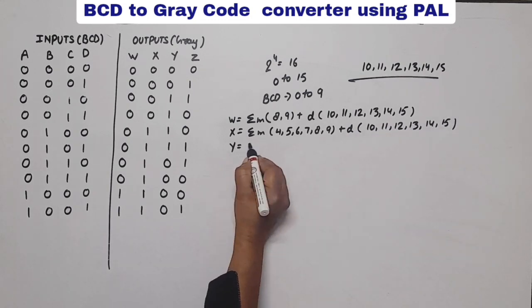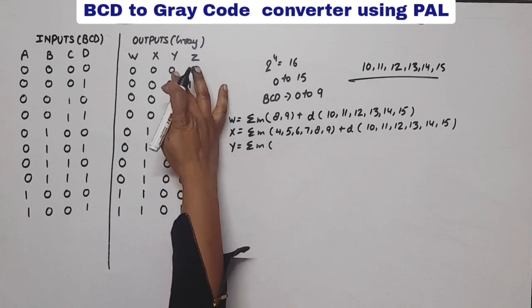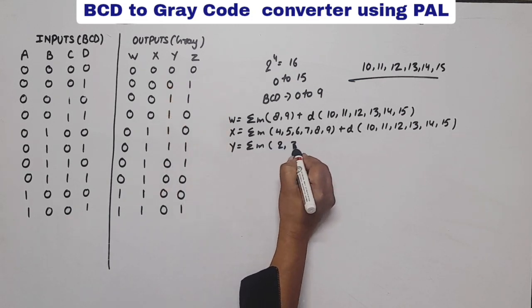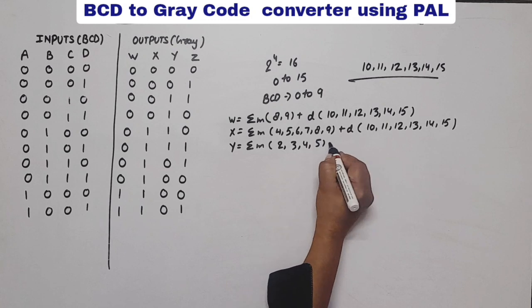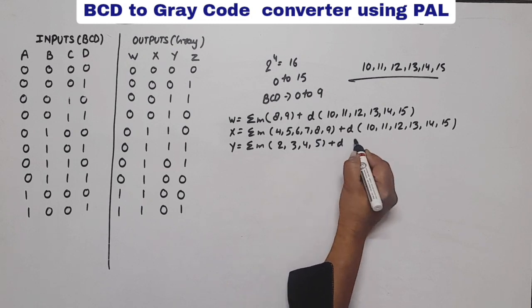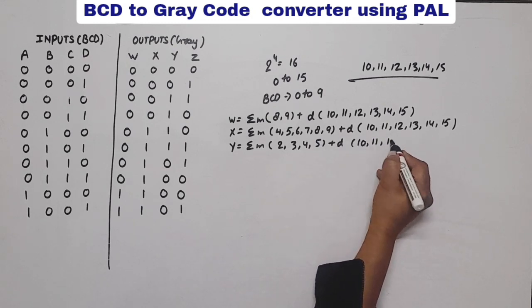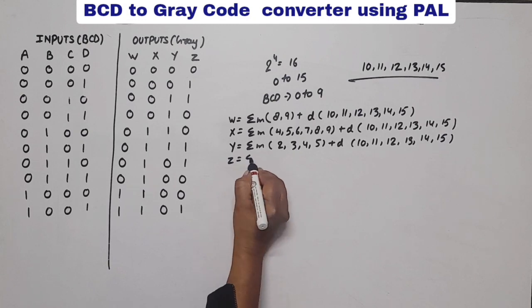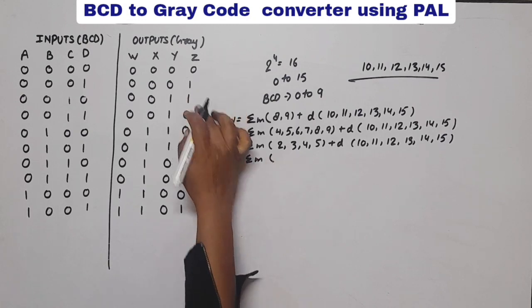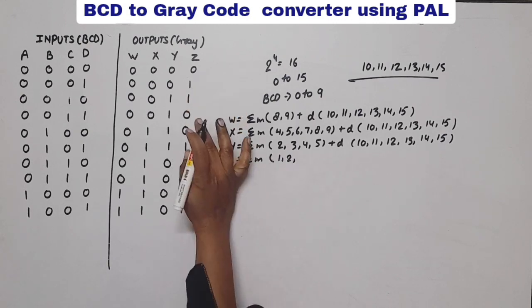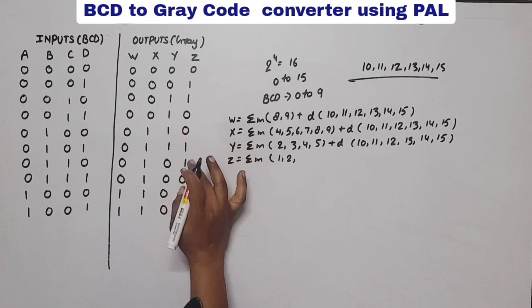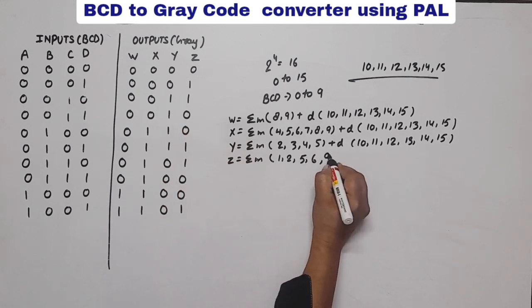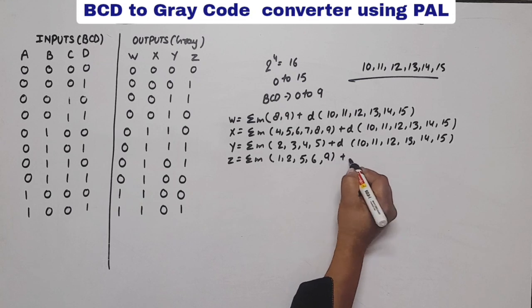Now for Y: minterms are 2, 3, 4, and 5, plus don't cares same as before. Now for Z: summation of minterms 1, 2, 3, 5, 6, 7, and 9, plus don't cares same.